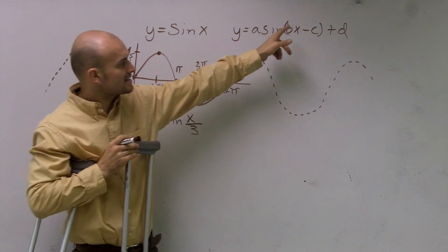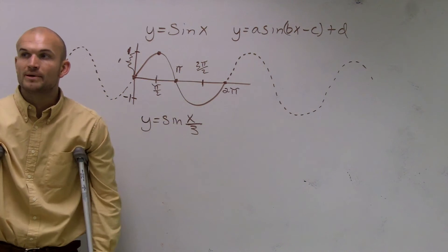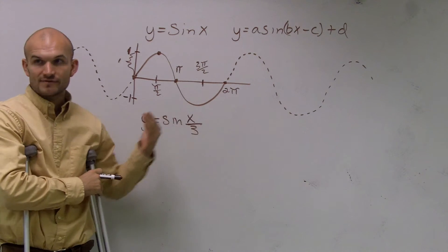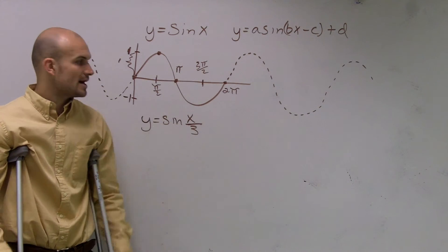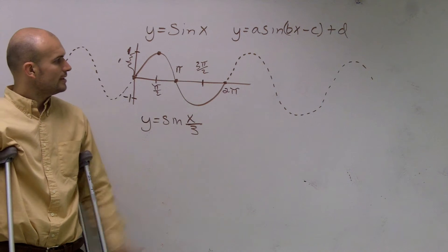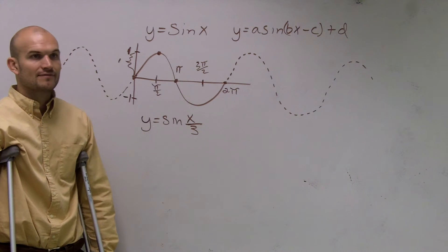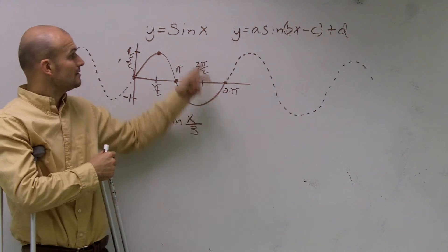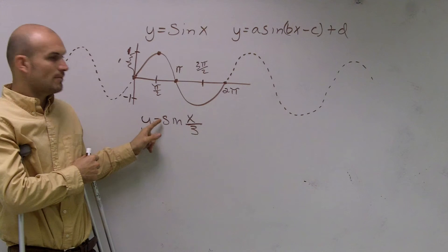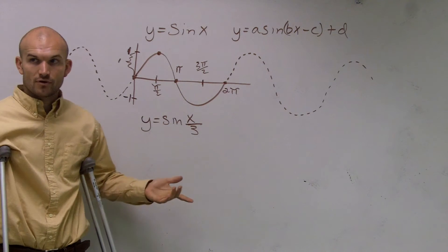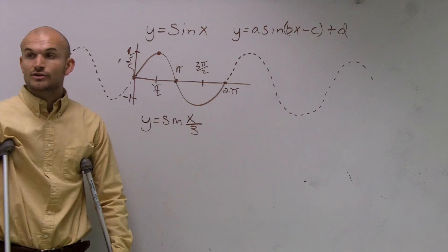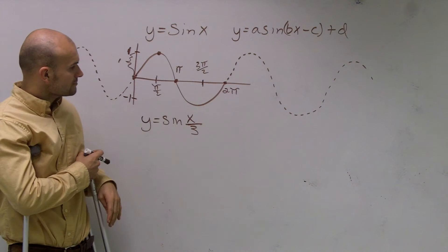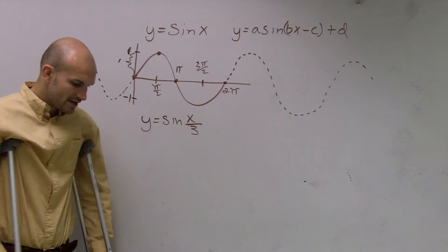Then we have our bx minus c and d, where b is going to affect our period, c tells us to shift left or right, and d tells us to shift up or down. Now, in this example, we do not have a shift left or right, we don't have a d to shift up or down, and we don't have a number other than 1 in front of sine. Therefore, the only thing you have to do is mess with the period, because the amplitude is going to be exactly the same and there's going to be no shifting left or right.